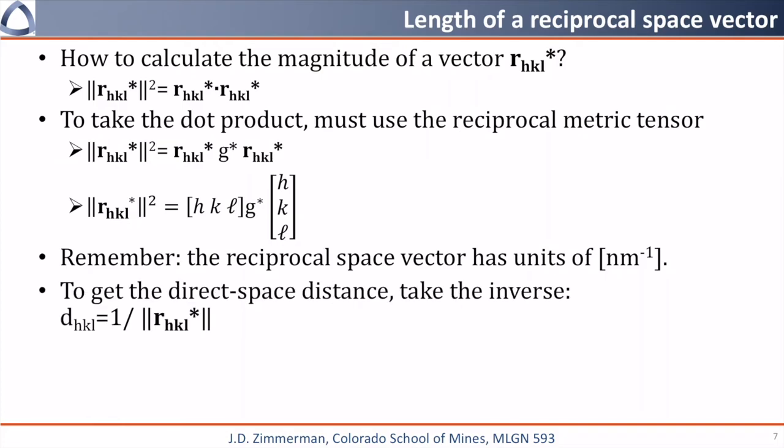The distance between two planes denoted by HKL is going to be 1 divided by the magnitude of r-star. Or perhaps it is better to use the result from our previous matrix calculation, where 1 divided by the distance between planes squared is going to be HKL times G star times HKL.